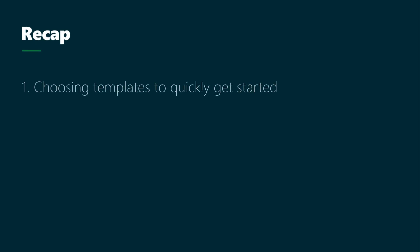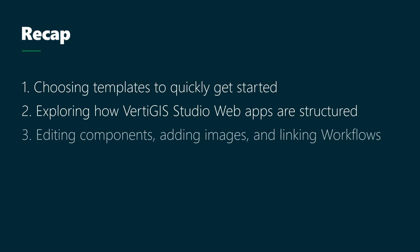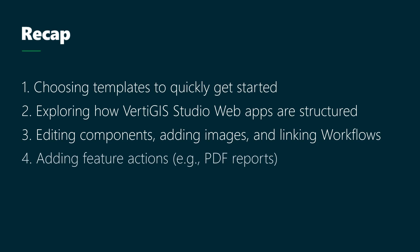So to recap: we have chosen a template to give us a head start on creating our application. We explored how every application is made up of rows and columns. We looked at how to edit components, add images, and add workflows to the toolbar. And finally, we added a feature action to a layer on the map to generate a PDF report.